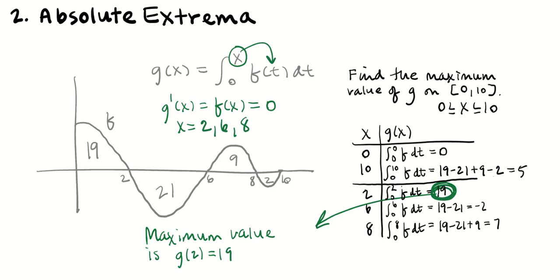You might ask: since x equals 6 is a relative minimum, why not just cross it off? If you want to cross it off, you'd have to write a note justifying why — not only justify that x equals 6 is a relative minimum (g prime, which is f, goes from negative to positive), but also remark that a relative minimum is not a candidate for an absolute maximum. It's faster to just evaluate the function at all critical points, grind through it, and leave yourself eligible for all the credit.